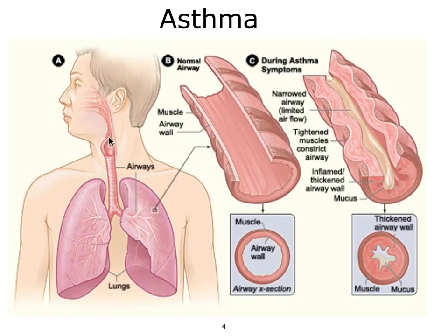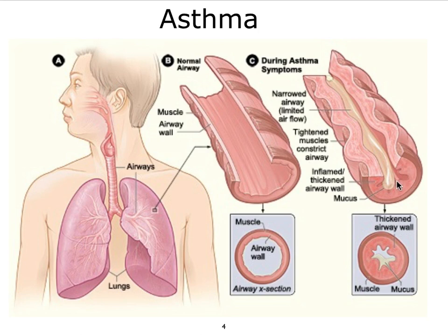What does asthma look like when we go into the lungs? It affects mainly the large airways. A normal airway has bundles of muscle around it and a nice open lumen. In asthma, this airway is inflamed: there's edema which makes the wall thicker, the bundles of smooth muscle are contracted making the lumen even smaller, and there's excess mucus production which fills up the lumen even more, meaning there's very little area to actually transport air.